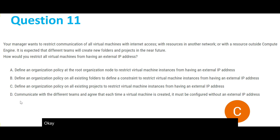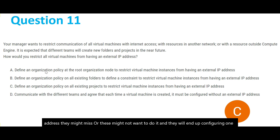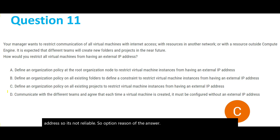Option D is not reliable at all because there is no guarantee that each and every person will make sure to configure the virtual machine without an external IP address. They might miss it or they might not want to do it and will end up configuring one with an IP address. So option D is not the answer.